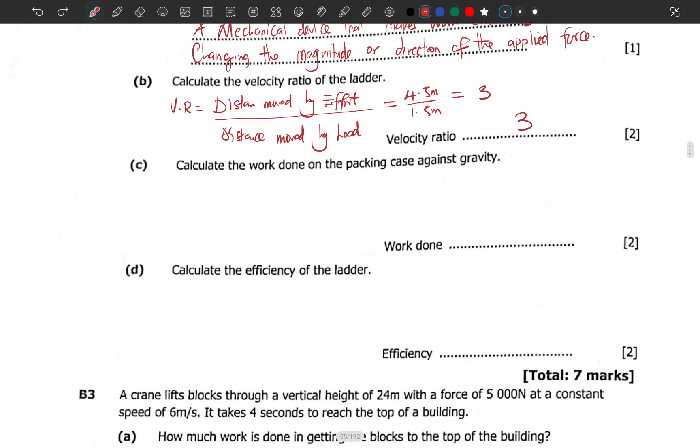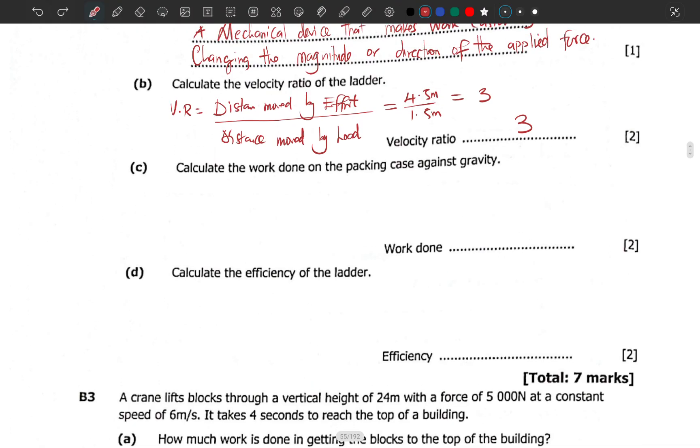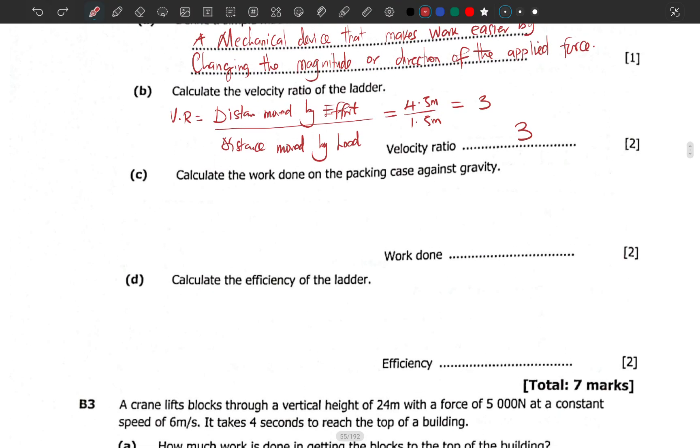Let's go to work done on the parking case against gravity. You hear gravity, parking something. Work done against gravity. Work done against gravity will be the force. It will be the mass multiplied by gravity multiplied by the height. It's like potential energy. You hear work done against gravity, it's just like potential energy. But mg has already been given as the force, which is the load itself, 900.